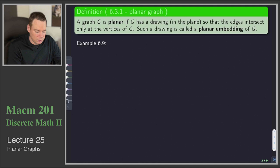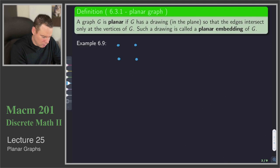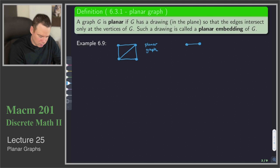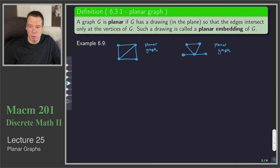A graph G could exhibit more than one planar embedding. So let's have a look at some examples. Here is a graph with four vertices and five edges — this is a planar graph because I've drawn it with a planar embedding. How about another one — maybe something like this: we've got a triangle and a couple more edges hanging off of it. This is a planar graph because I've been able to draw a planar embedding of it.